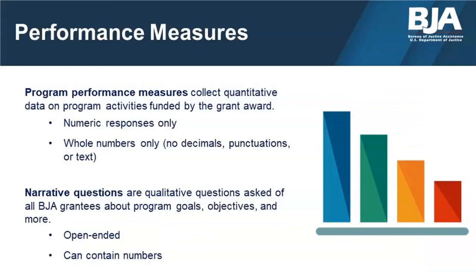The questions in the PMT are made up of two main categories. The first is quantitative performance measures, where you report on numeric data collected over the course of the reporting period — for example, how many participants did you train? The second section contains qualitative narrative questions. These are open-ended and do not require a numeric response. The narrative questions answered during the April to June and October to December reporting periods fall into this category — for example, what challenges did you face in completing your program goals? These questions are meant to capture the full experience of conducting activities with BJA funds. The more information you provide, the better.